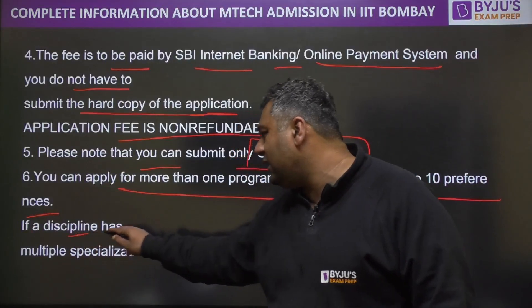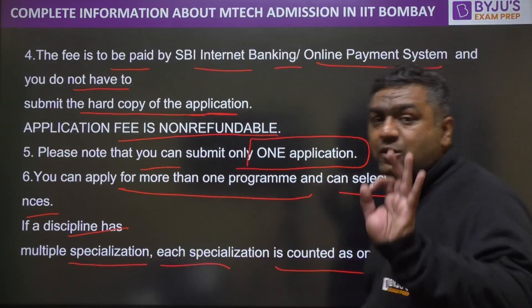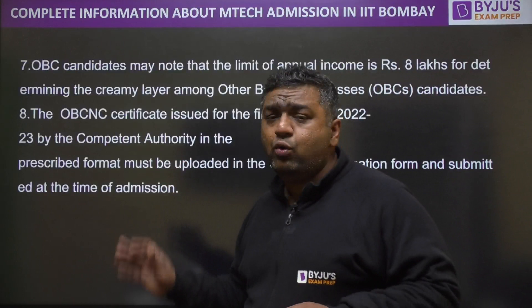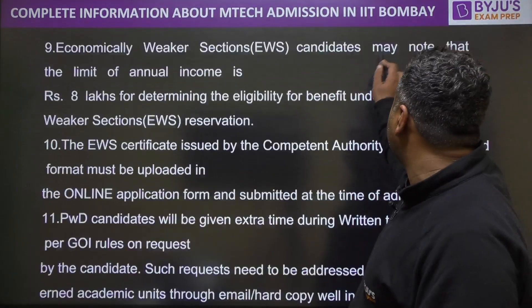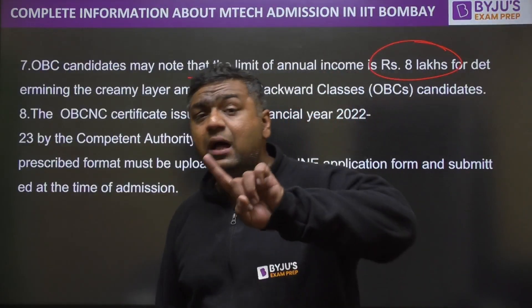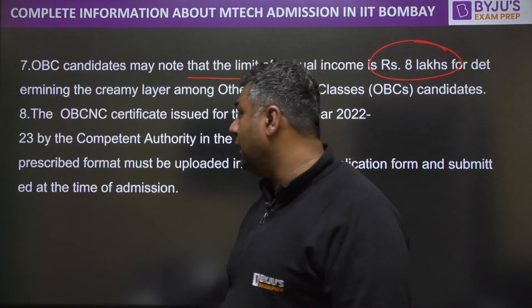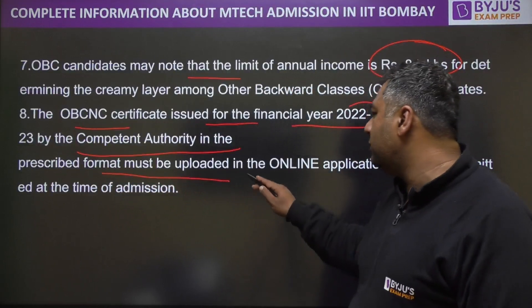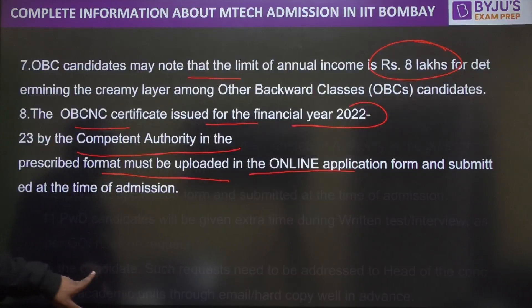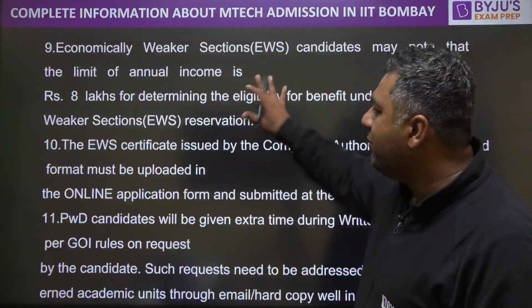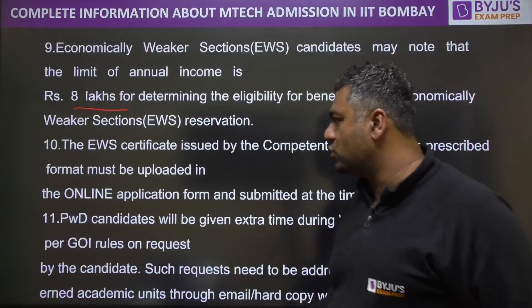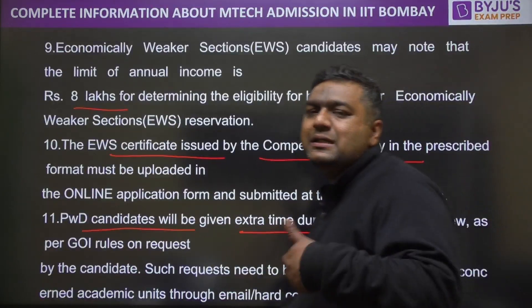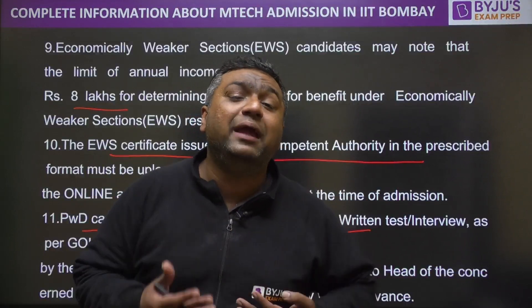If a discipline has multiple specializations, each specialization is counted as one option. For OBC candidates, the annual income limit for determining creamy or non-creamy layer is now ₹8 lakhs. The same ₹8 lakh limit applies for the EWS category — this is from family income from all sources. The OBC-NCL certificate issued for financial year 2022-23 by a competent authority in the prescribed format must be uploaded in the online application form at the time of admission. Similarly, the EWS certificate issued by a competent authority must also be submitted. For PWD candidates, extra time is allowed as per Government of India rules, but you need to write a mail to the institute for the same.